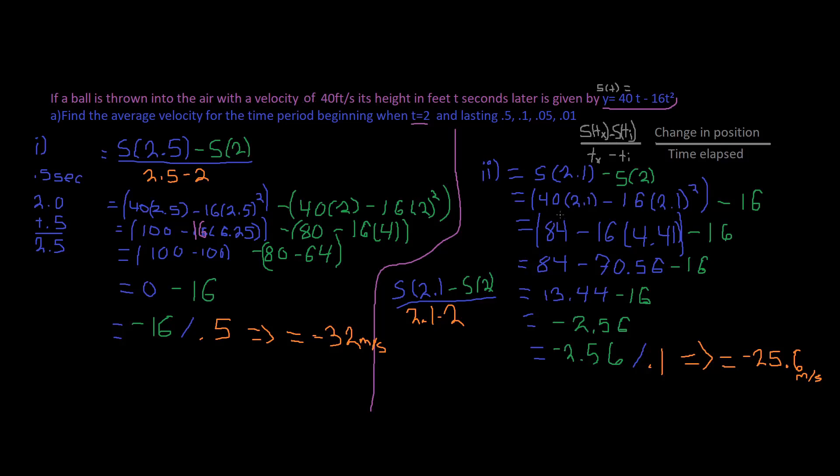Now we do the same process for this one, except now we add 0.1 to 2. And so we plug that into our function. For s(2), it's already solved, so we don't have to worry about that. We just keep plugging what we already know, which is negative 16. We solve for that, it ends up being negative 2.56, we divide that by 0.1, and that ends up giving us negative 25.6 meters per second.